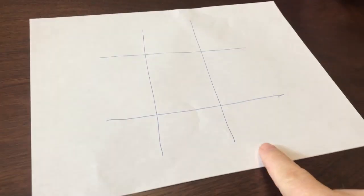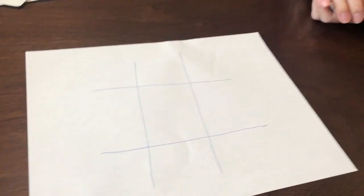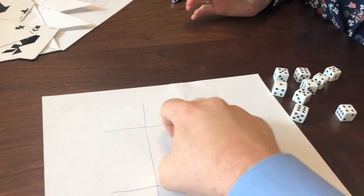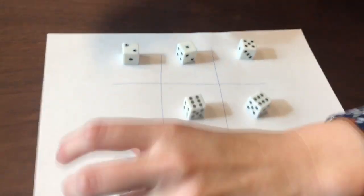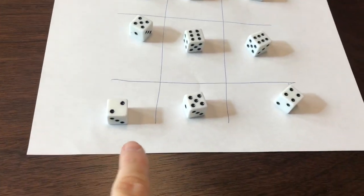What we've got here is essentially a tic-tac-toe game. Now what I'd like you to do is put the dice in each of the spaces. Good. Now what we'll notice is if we look at a row right here...